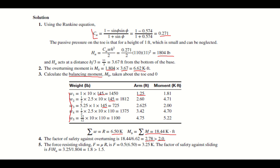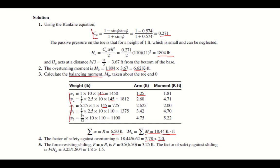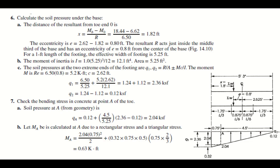The resisting force against sliding is F equals mu times R. With mu equal to 0.5 and R equal to 6.5 kips, F equals 3.25 kips. The factor of safety against sliding equals F divided by HA: 3.25 divided by 1.8 equals 1.8, which is larger than 1.5. So the wall is safe against sliding.